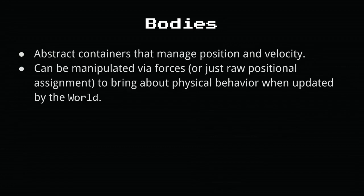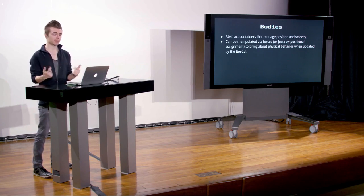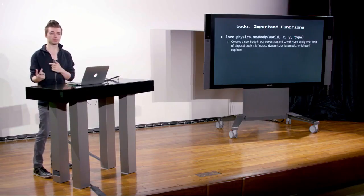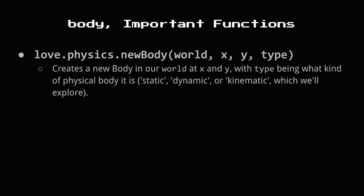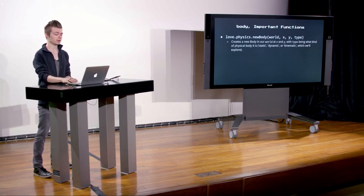Beyond the world object, which sets up our stage, we need bodies to actually interact with each other. A body is an abstract container — it basically holds a position and a velocity. You attach things to it via fixtures that give the body a shape and therefore a collision box. To create a new body: love.physics.newBody — pass in the world so the world has a reference to it. Every time we call update on our world, it knows to perform collision checks on that body, update its position and velocity.